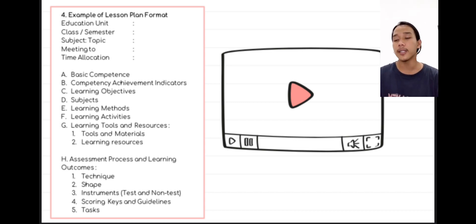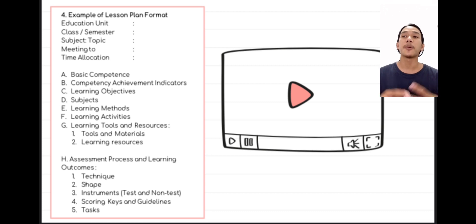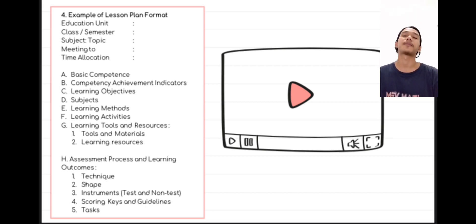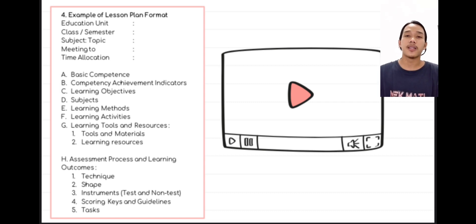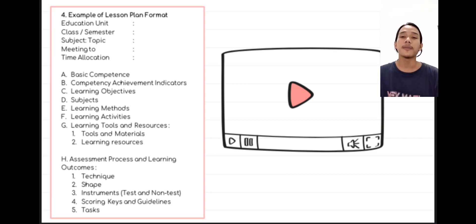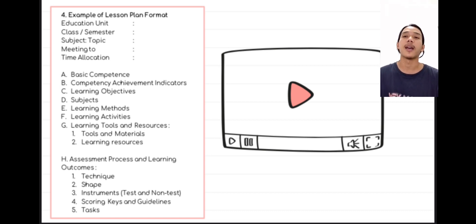Point B is competence indicators — the development of basic competencies depending on what learning will be taught. The indicator is the development of the basic competence or KD. Point C is learning objectives — aligned to the basic competence and learning to be taught. For example, students understand or are able to understand the solar system. Point D is learning material, which includes regular learning material, enrichment learning material, and remedial learning material.